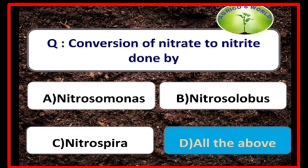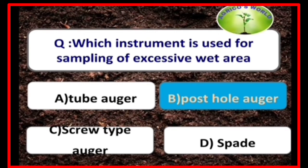Conversion of ammonia to nitrate is done by Nitrosomonas, Nitrosolobus, and Nitrospira — all three organisms are involved. Post-hole auger is the instrument used for sampling of excessive wet areas.